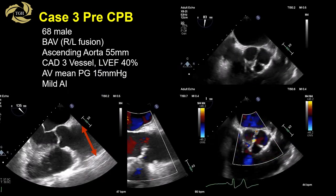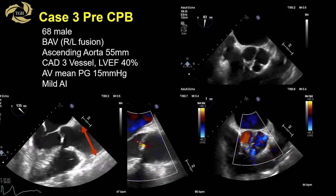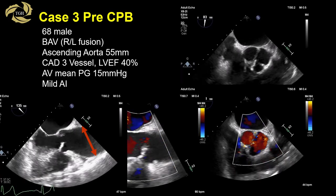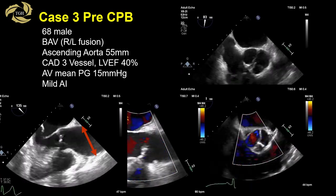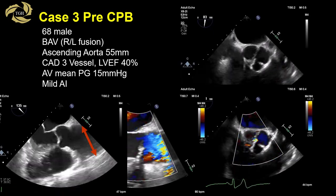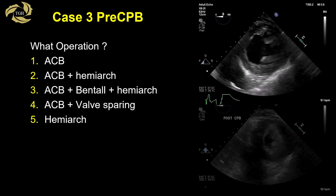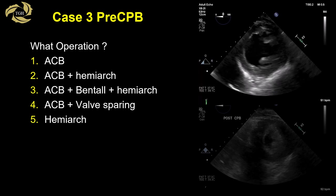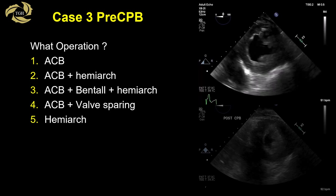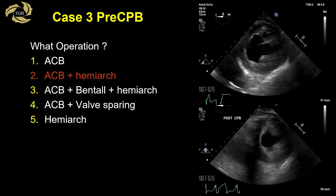The third case is a 68-year-old male presenting with a bicuspid aortic valve, ascending aorta dilatation of 55 millimeters, significant triple vessel coronary disease, and a left ventricular ejection fraction of 40%. The valve is sclerotic with a mean gradient of 15 mmHg and mild AI. The surgical options considered included: CABG alone, CABG and hemiarch, CABG with Bentall and hemiarch, CABG with valve sparing, or just the hemiarch. The correct answer was CABG and hemiarch, which the patient underwent successfully.